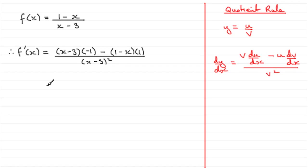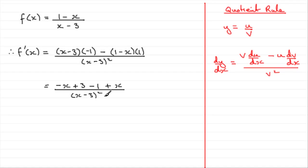Need to tidy this up. Expanding the bracket: minus 1 times x minus 3 gives us minus x plus 3. And here, minus 1 times 1 minus x gives us minus 1 plus x. That's all over x minus 3, all squared. Make sure you don't have this minus leaking over the edge of the division, because it will alter the meaning completely — it would make it minus all of that top. Simplifying: minus x plus x goes to 0, and 3 take away 1 is 2, so we get 2 all over x minus 3, squared.